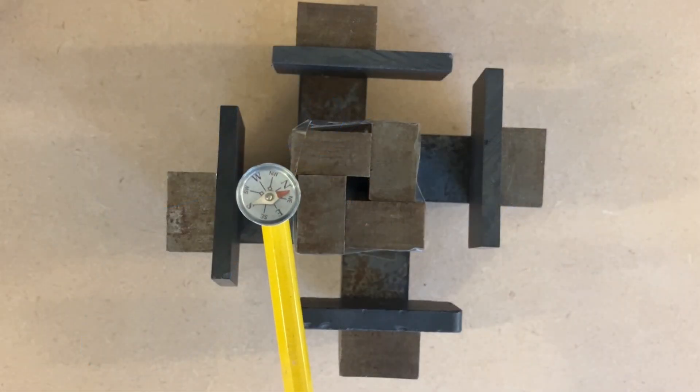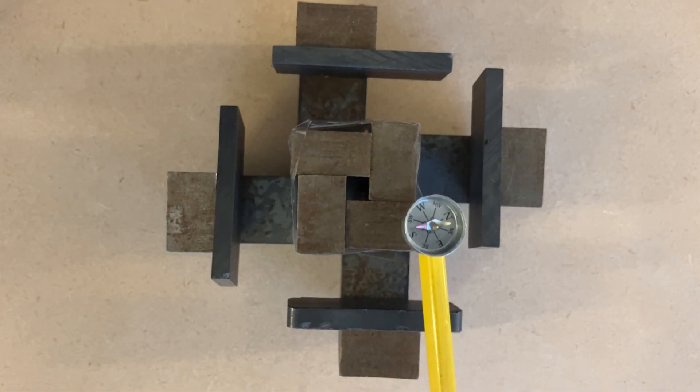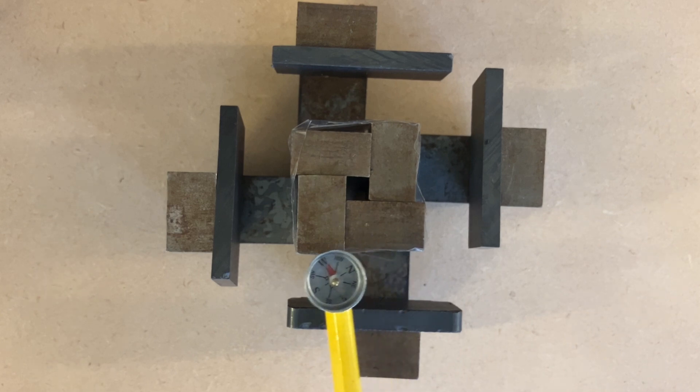This compass shows that the magnetic field is going from the magnets to the iron in the middle. Let's draw in that magnetic field.